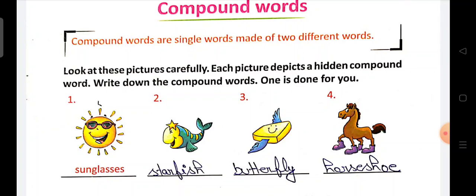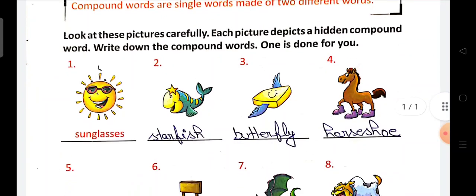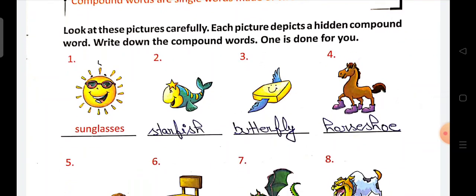Look at these pictures carefully. Each picture depicts a hidden compound word. Write down the compound words. One is done for you. So students, look at these pictures. One picture is clearly in front of you, and the other word, the compound word, is hidden in it. Then definitely we will find out.